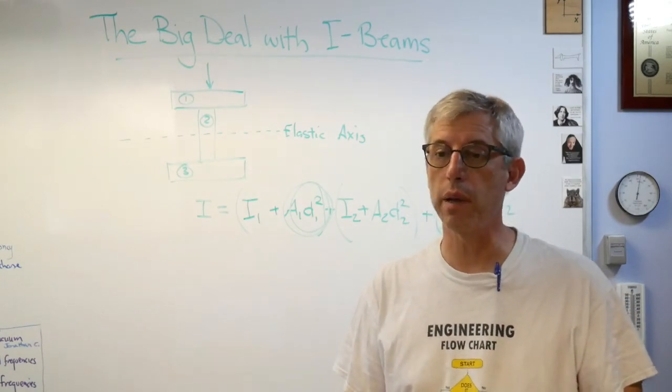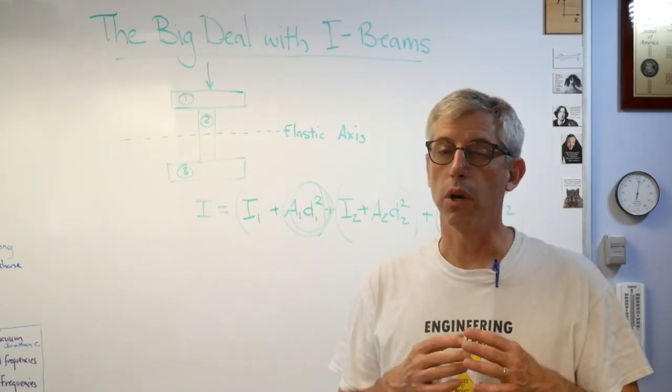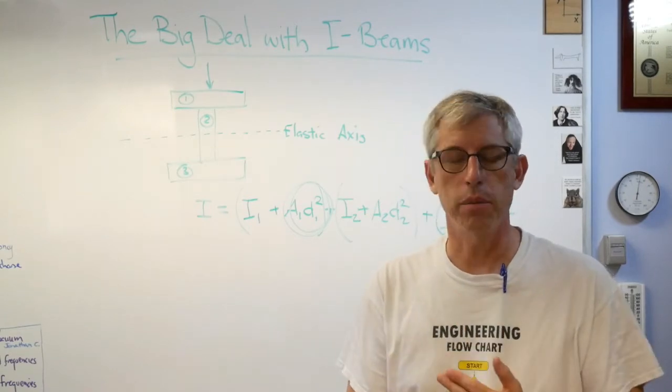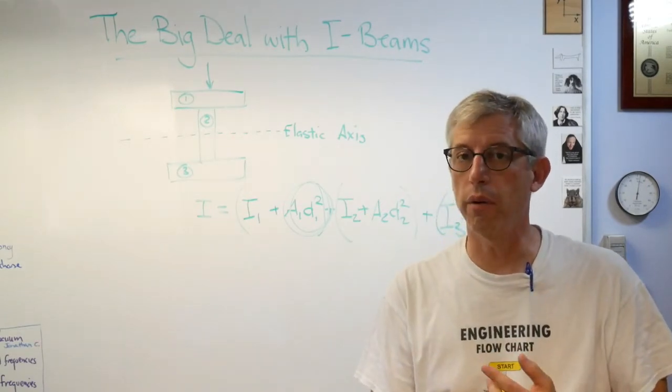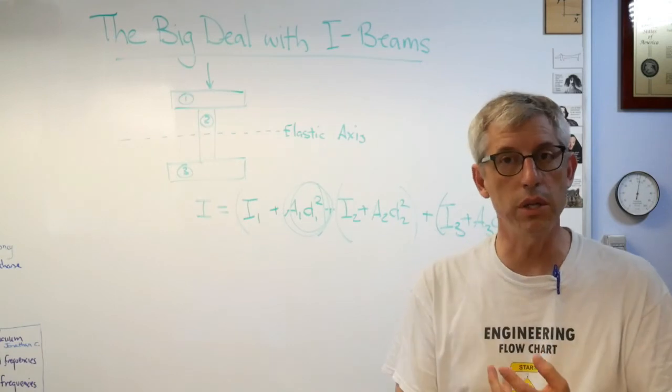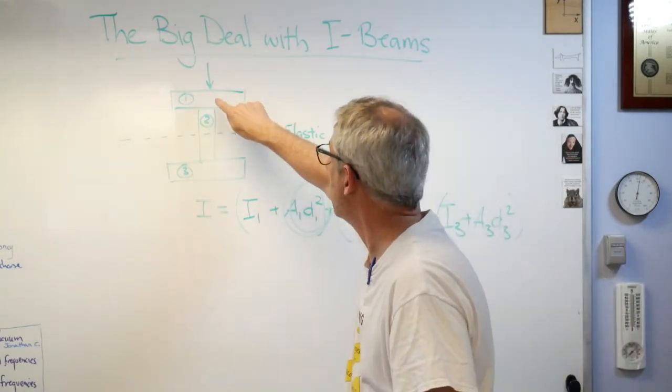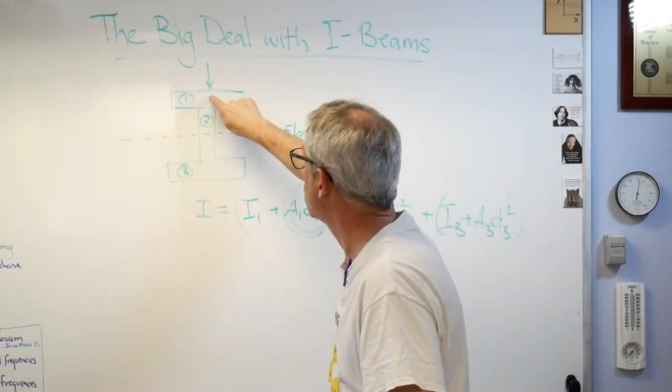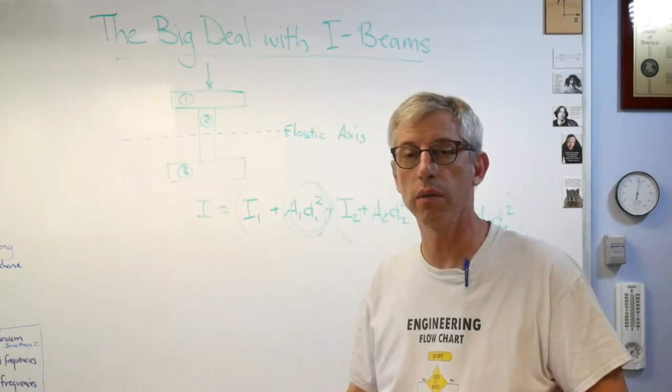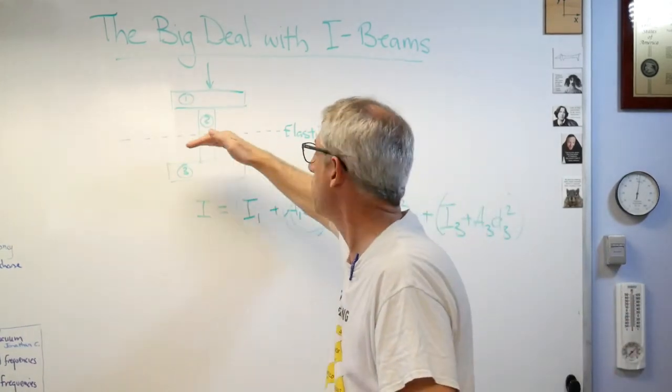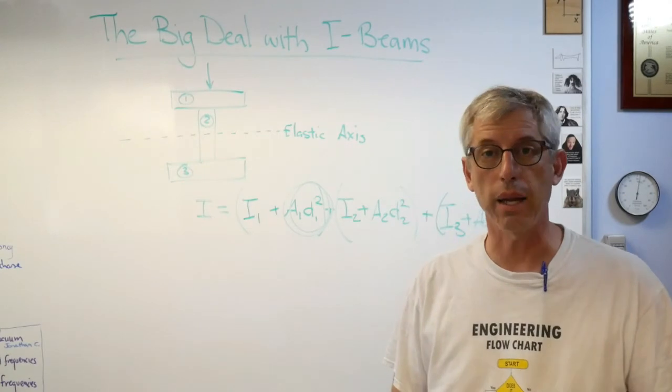So here we go: I-beams absolutely everywhere. The reason they're everywhere is they're efficient. And the reason they're efficient is that a large portion of the cross-sectional area of the beam is as far from the elastic axis as you can get it.